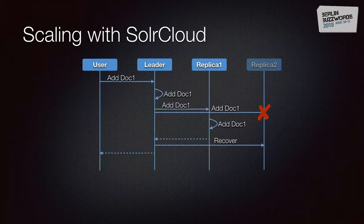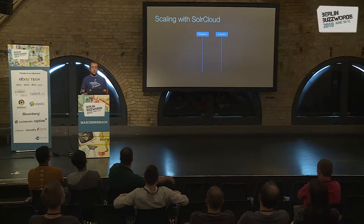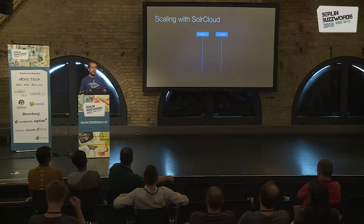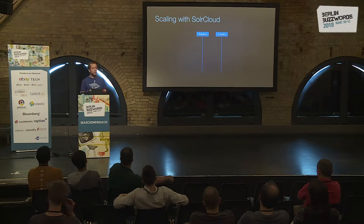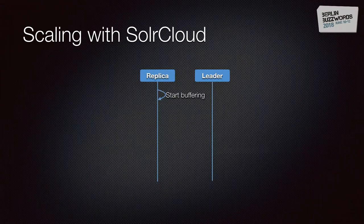The replica that's missing data is placed in recovery state and can no longer serve search traffic. Once it's back up, it notices it's been placed in recovery and tells the leader it's ready to become active again. The leader then starts sending every new update to this recovering replica, which buffers those documents instead of indexing them immediately.